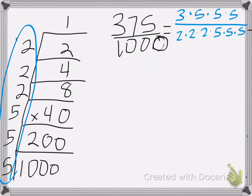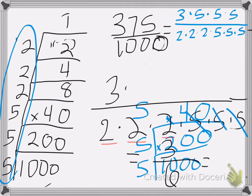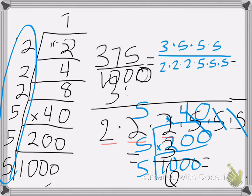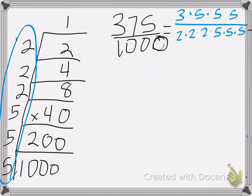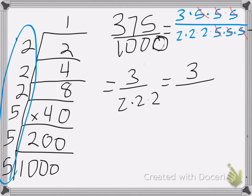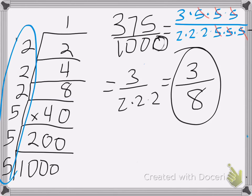Now I can work on canceling my numbers. I can cancel the 5s, 5s, and 5s. So I end up with 3 over 2 times 2 times 2, which is equal to 3 over 2 times 2 is 4, times 2 is 8. So I end up with 3 eighths as my answer.